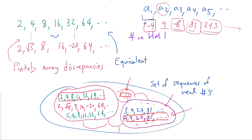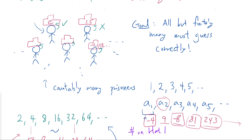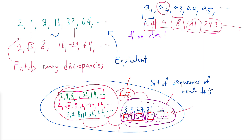So the point is, all the prisoners — every single prisoner — is going to recall the same memorized representative, say 4, 9, 27, 81, and they are going to guess the entry based on this. So prisoner 1 guesses 4, prisoner 2 guesses 9, prisoner 3 guesses 27, prisoner 4 guesses 81, prisoner 5 guesses 243, and so on. Since the memorized representative and the actual sequence only differ in finitely many places, we only get finitely many incorrect guesses — we have satisfied our goal. For example, we were wrong at the negative 4 and negative 8 positions, but starting at 81 and afterward, the sequence completely agrees with the representative everyone memorized, so everyone gets it correct after that.